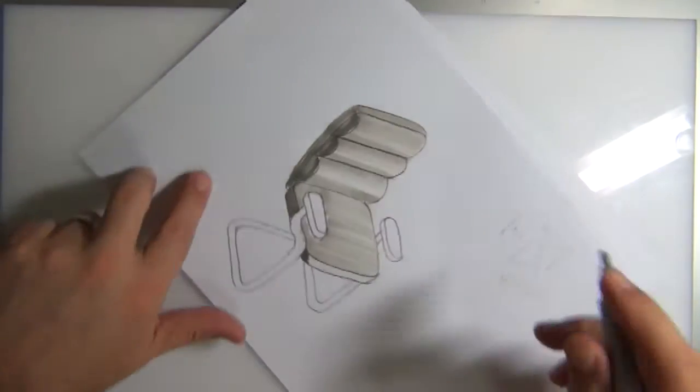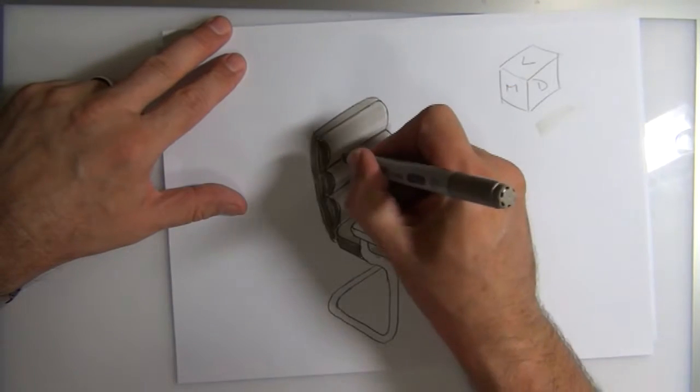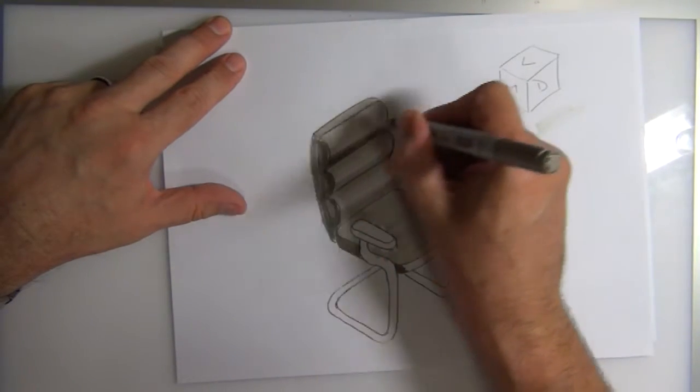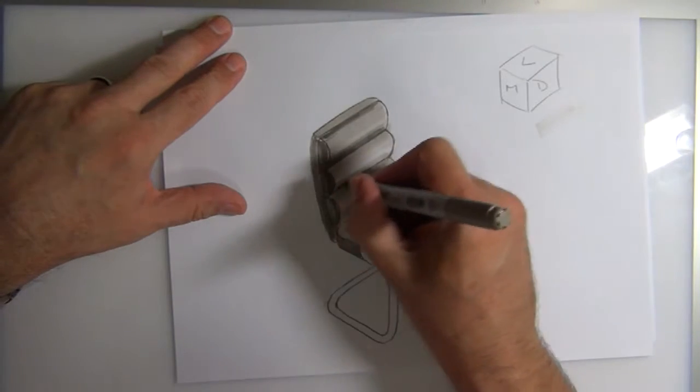Now here on the corner is where it's going to go from light to dark as it goes around there. I know that the bottom edges here are going to be darker and the top edges here are going to be darker because this is a curve.